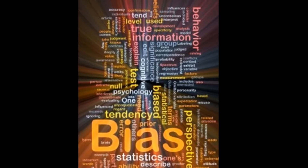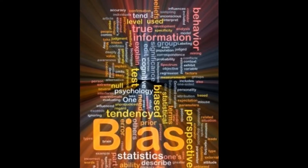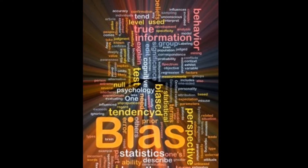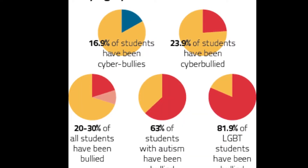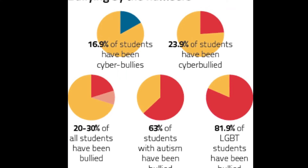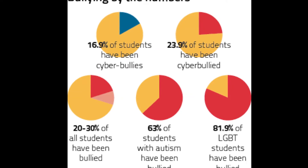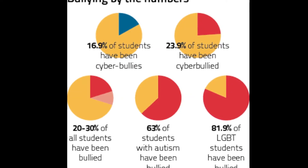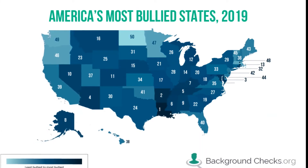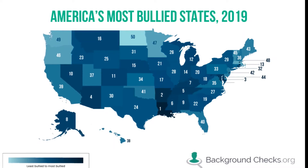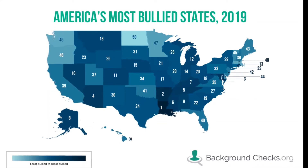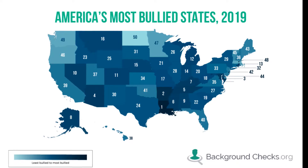Bias-based bullying is when children are bullied because of some aspect of their social identity, whether that's race, gender, ethnicity, religion, disability, or sexual orientation. Students with disabilities report greater rates of victimization than their peers without disabilities. 23 percent of African American students, 23 percent of Caucasian students, 16 percent of Hispanic students, and 7 percent of Asian students report being bullied at school because of their race. With regards to LGBTQ students, 70 percent reported being verbally bullied, 29 percent were physically bullied, and 49 percent experienced cyberbullying in the past year.